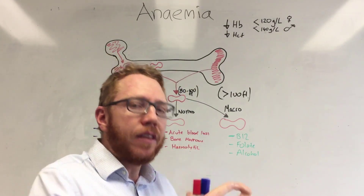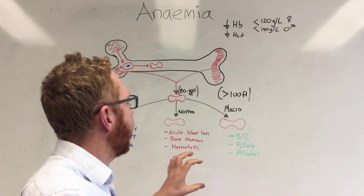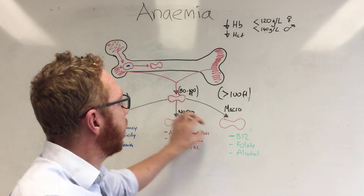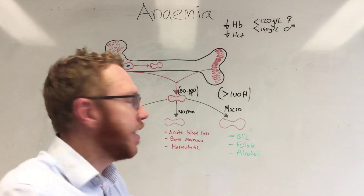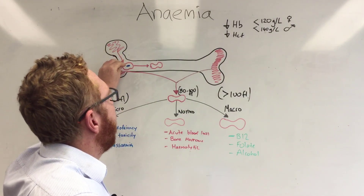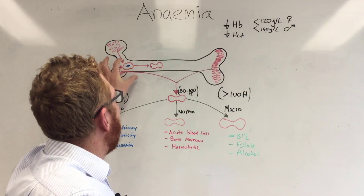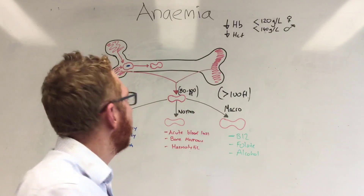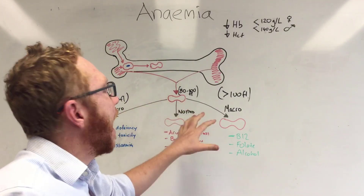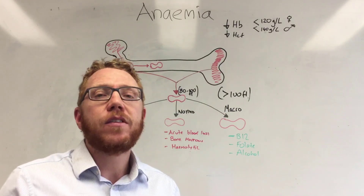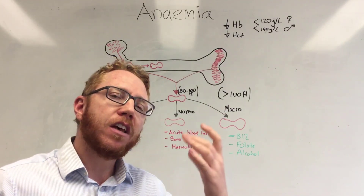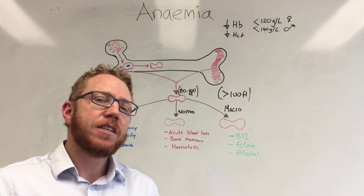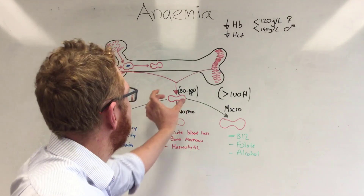Anemia can be categorized based on the size of the red blood cell — small cells, normal cells, or large red blood cells. Red blood cells are created in the red bone marrow. After about three days they transition from a stem cell into a reticulocyte, which is an immature red blood cell, and then move into the blood. To calculate the size of the red blood cell, we divide the hematocrit by the total number of red blood cells, which gives us a number in femtolitres.